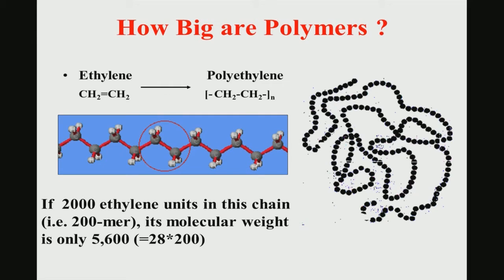To understand how big a polymer is: ethylene is CH₂CH₂ and polyethylene is (CH₂CH₂)_N, where N can be very large — for example, 2000 units or more. For ethylene, one monomer unit has a molecular weight of 28. If N is 200 units, the molecular weight is around 5600.